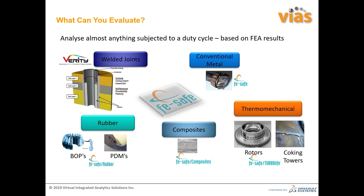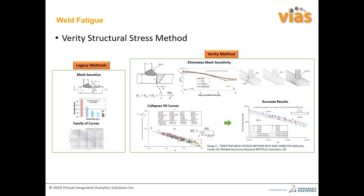Apart from the standard fatigue calculation, there are different kinds of add-ons available. With FE-Safe's default approach, you can predict fatigue life for conventional materials without any add-on. But if you are working with welded joints, rubber, thermomechanical analysis, or composites, you need add-ons such as Verity, FE-Safe Rubber, FE-Safe Composites, or FE-Safe Turbolife.